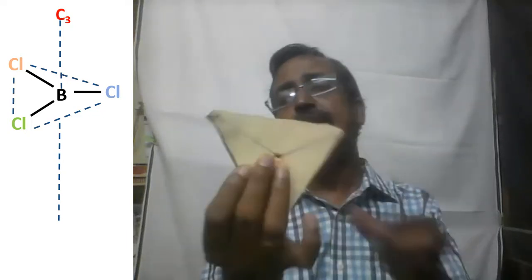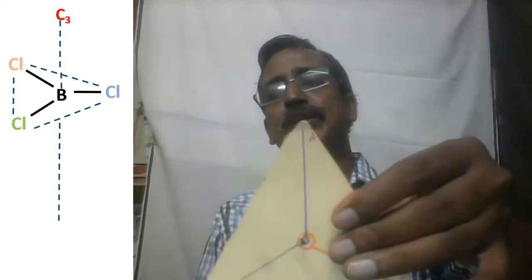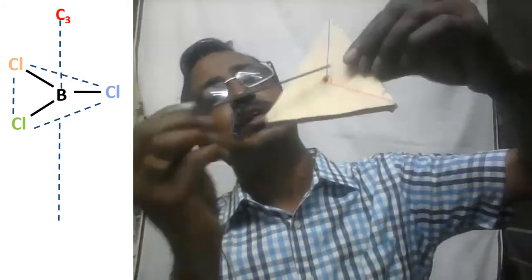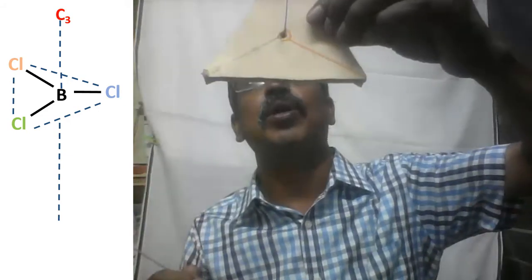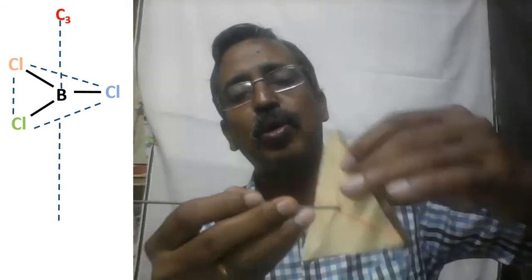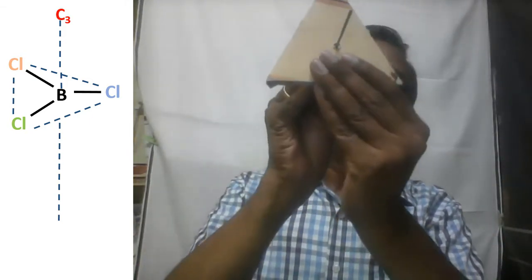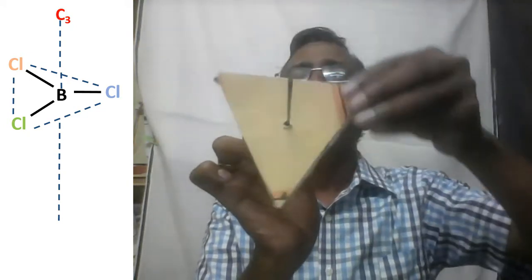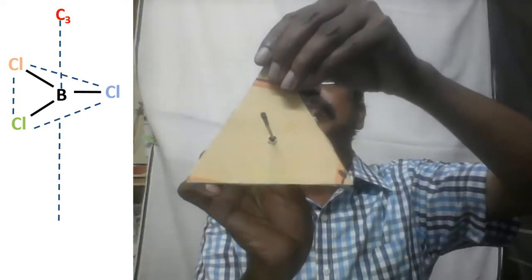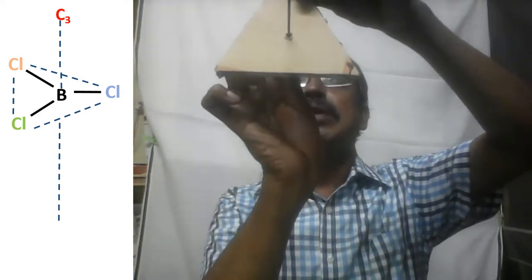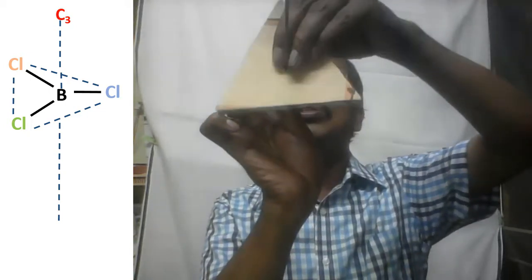If I consider the boron trichloride molecule to be triangular in shape, these three lines represent the three bonds present in the BCl₃ molecule, and the axis passing through the central boron atom represents the C3 axis. When I rotate through 120 degrees I get the first equivalent appearance; through another 120 degrees I get the second appearance; through a third 120 degrees I get the original appearance back. So when rotation is made through 360 degrees we get the same original appearance repeated three times, and so this is a C3 axis.